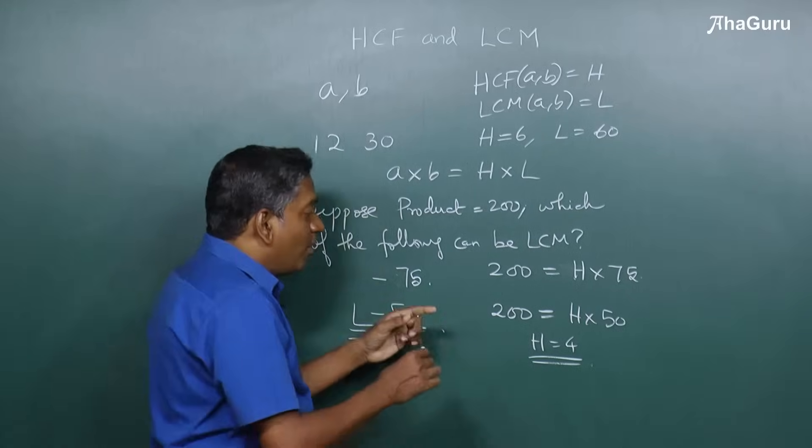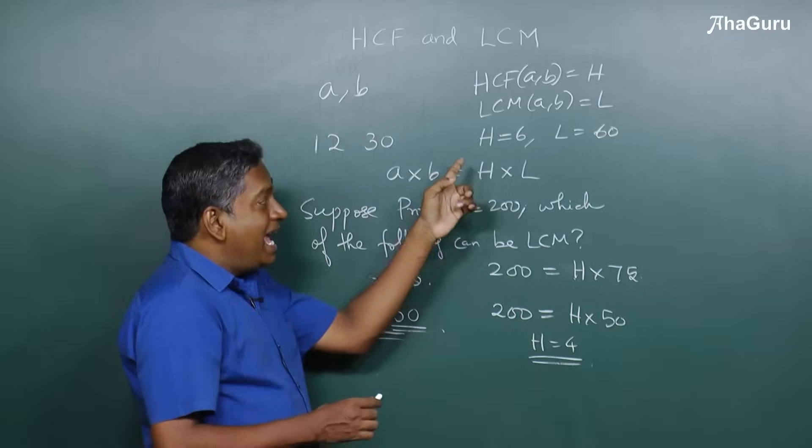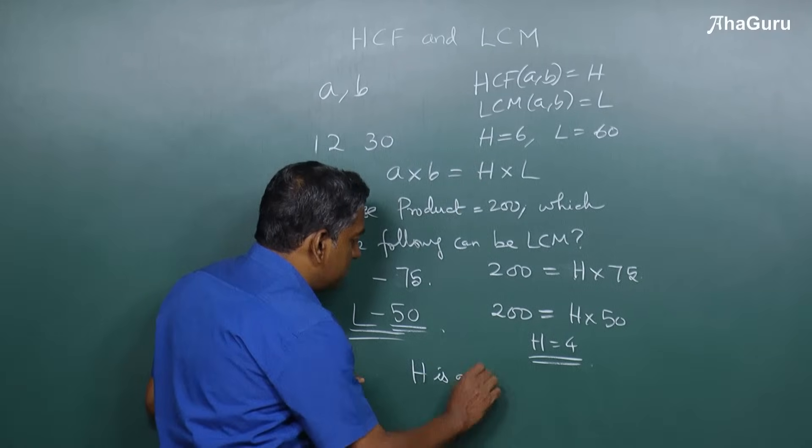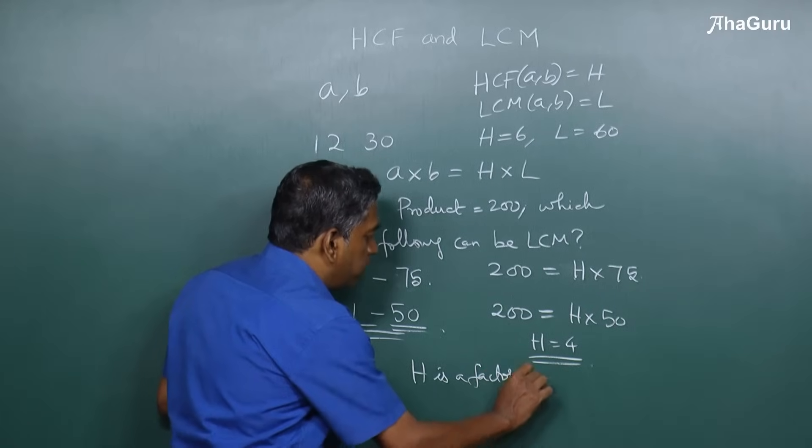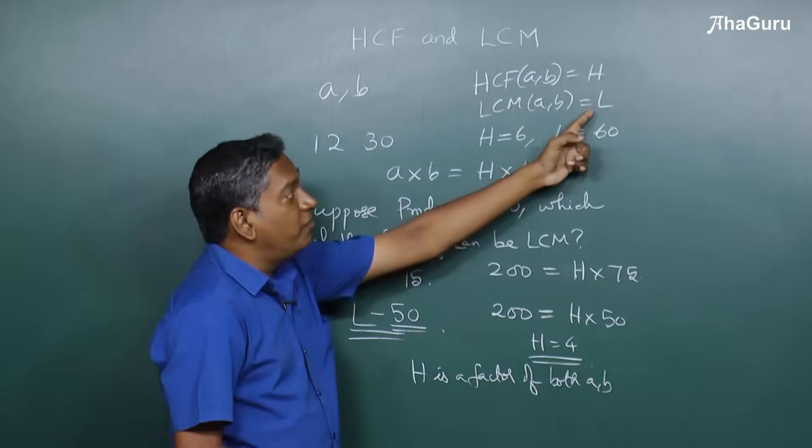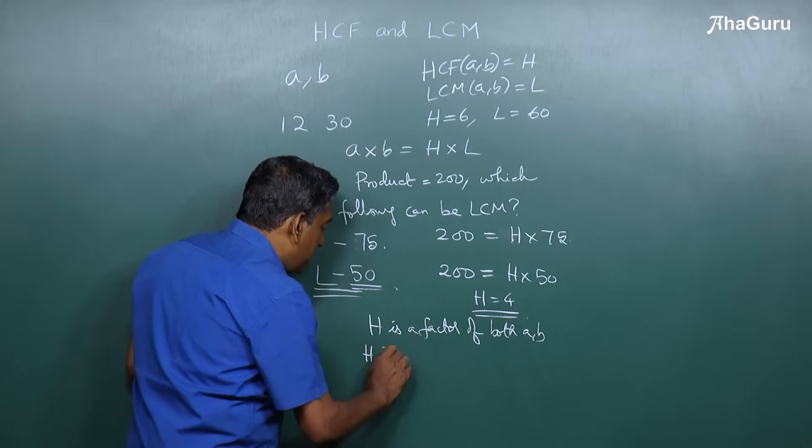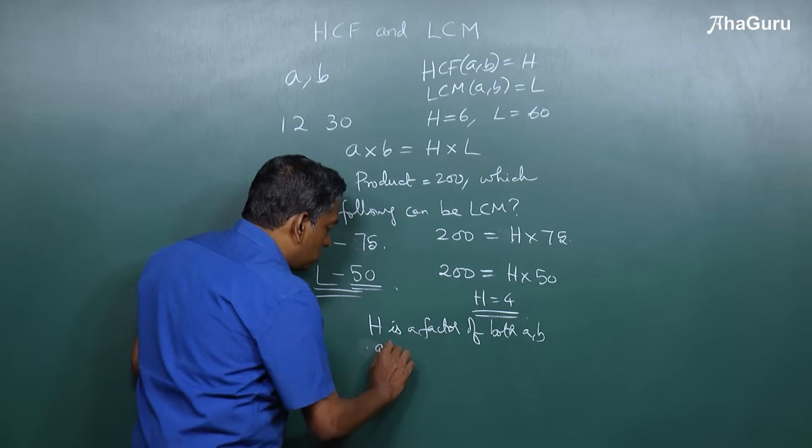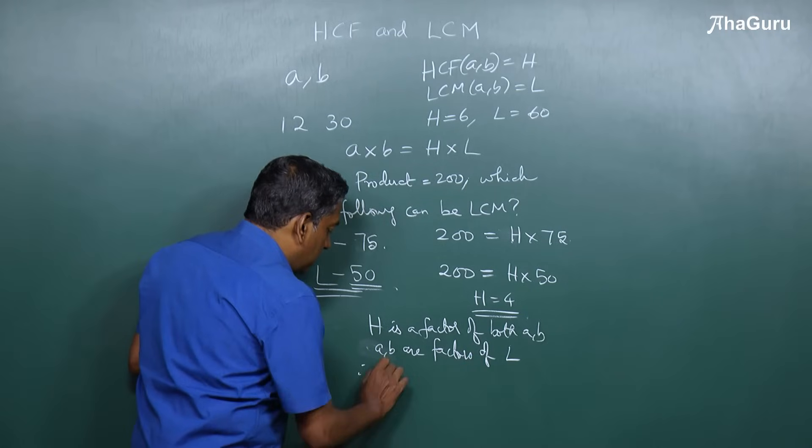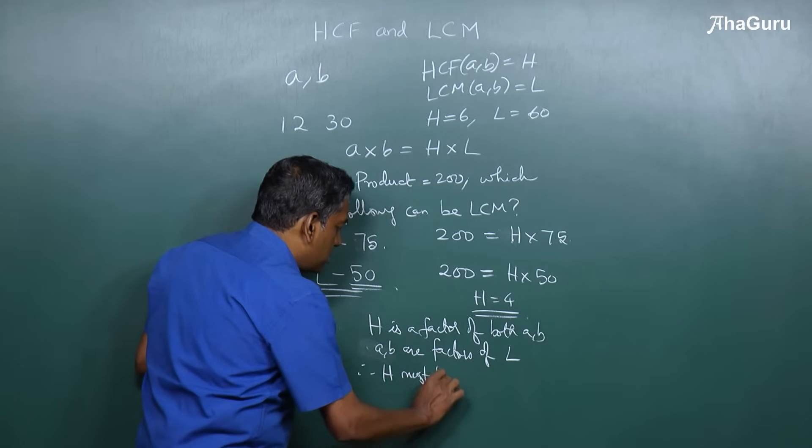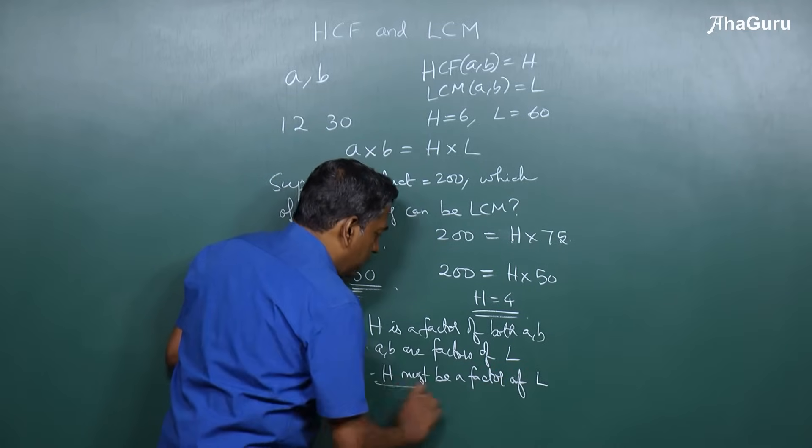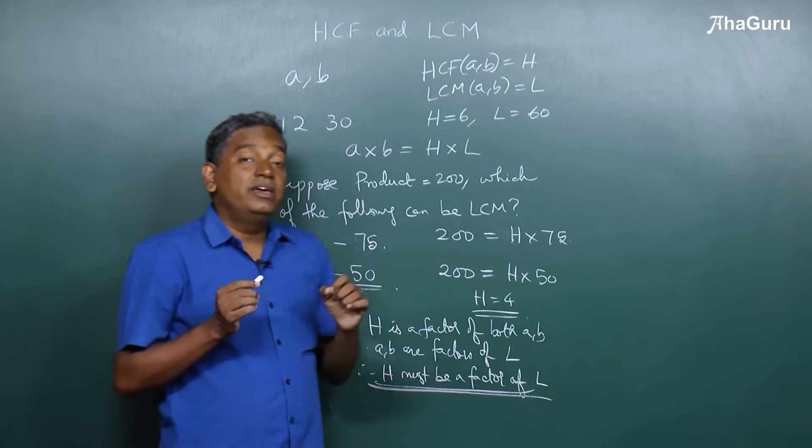And that is the fact that whatever you find as HCF, HCF is a factor of both A and B. HCF is a factor of both A and B, and A and B are factors of L. That means H must be a factor of L. So A and B are factors of L, therefore H must be a factor of L. And this is a very important idea.